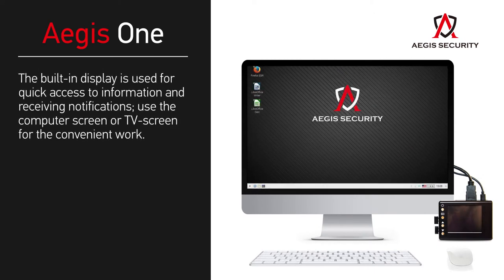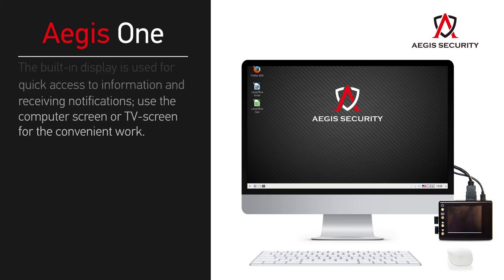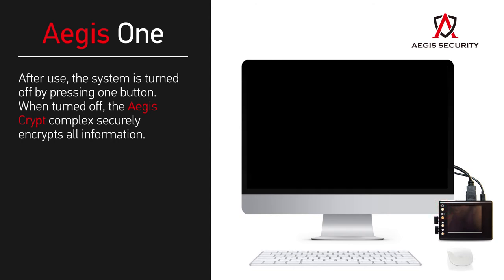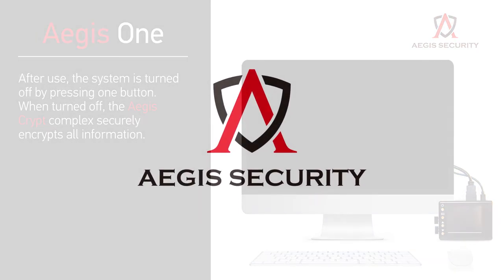Open the menu and go back to the big screen. The built-in display is used for quick access to information and receiving notifications. Use the computer screen or TV screen for convenient work. After use, the system is turned off by pressing one button. When turned off, the Aegis Crypt complex securely encrypts all information.